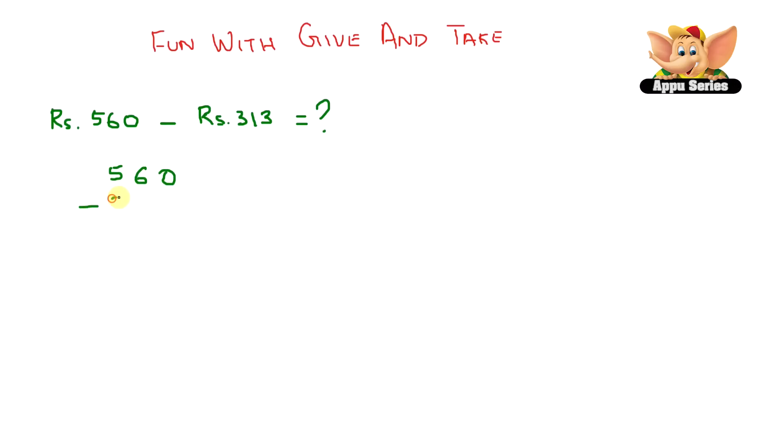Let's do the ones first. We have 0 minus 3, so we know that we need to borrow from the tens column. So this becomes 5 tens and here we have 10 minus 3 which is 7. In the tens we have 5 minus 1 which equals 4. And in the hundreds we have 5 minus 3 which is 2. So you need to save up 247 rupees more. Wow, that's a lot more saving than you got to do.